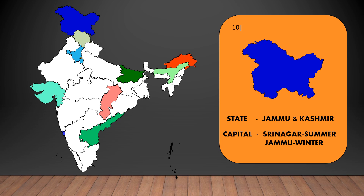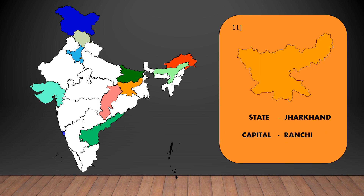The capital of Jammu and Kashmir is Srinagar in the summer season and Jammu in the winter season. The capital of Jharkhand is Ranchi.